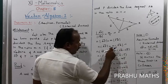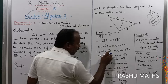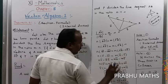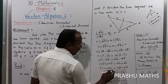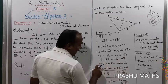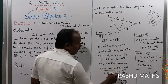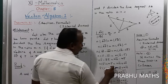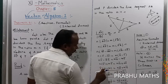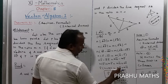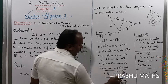Substituting OP equals R vector, OA equals A vector, OB equals B vector, and expanding both sides: N times (R minus A) equals M times (B minus R). Distributing: NR minus NA equals MB minus MR. Collecting R terms on one side: NR plus MR equals MB plus NA. Therefore R times (M plus N) equals NA plus MB. So R vector equals (NA vector plus MB vector) divided by (M plus N).